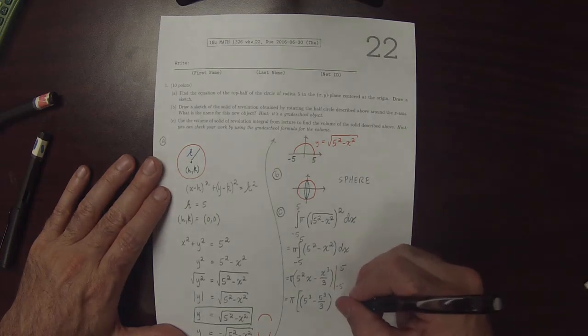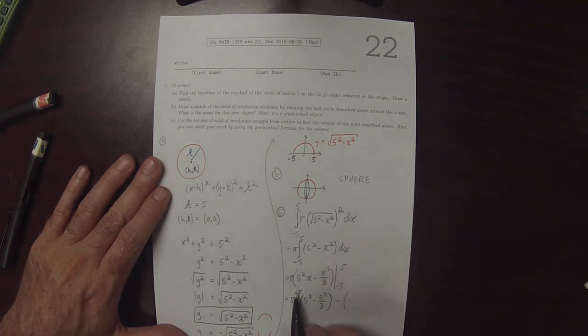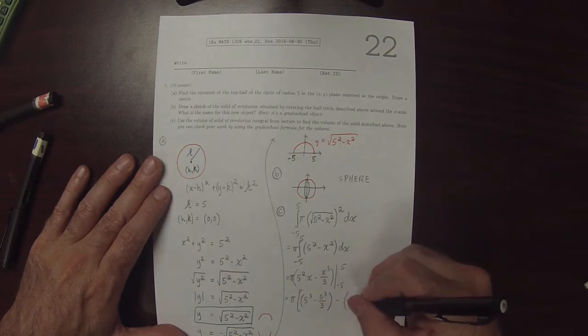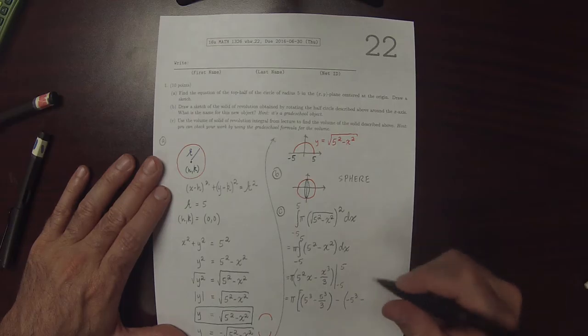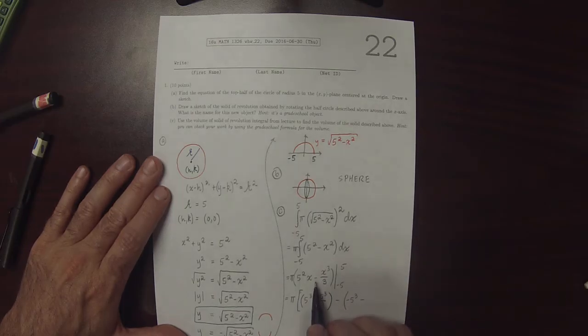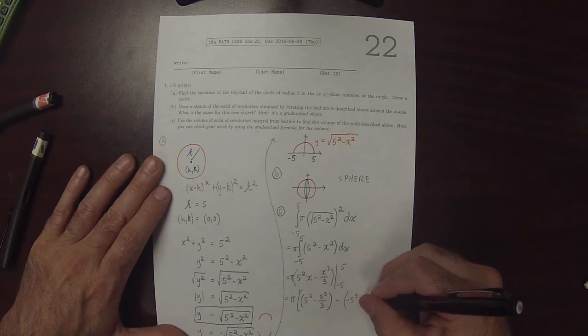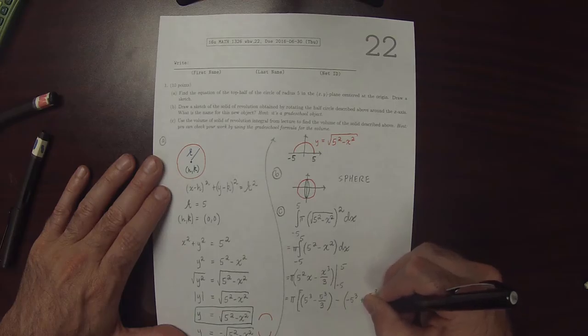And then minus 5 squared times negative 5, well, that's negative 5 cubed minus. So that's minus, so that's negative, so minus, and then we plug in negative 5 into here. That will cancel with this plus to give 5 cubed over 3.